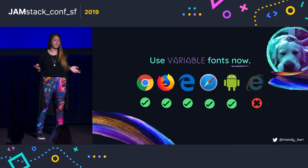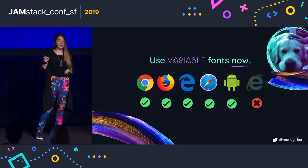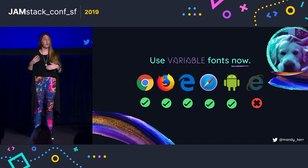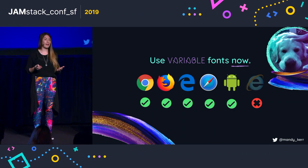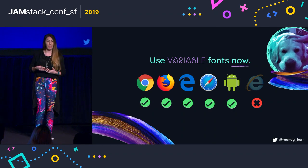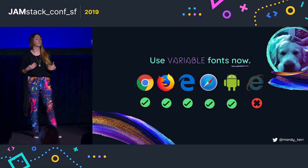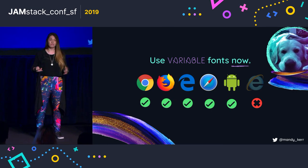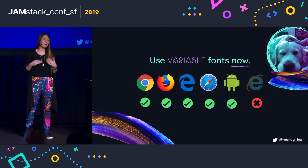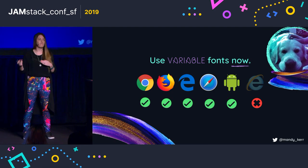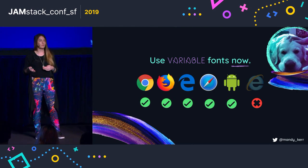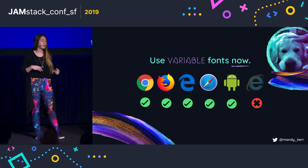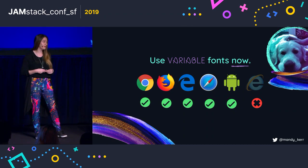We can use variable fonts now — browser support is really good. The only caveat is that for a browser like Firefox, you need a more modern operating system. On a Mac it's High Sierra and above, because it relies on the operating system to render the font in the browser. But you can totally use it now. If you need to support IE, you can fall back to a different font in your font stack, or use CSS feature detection to only load the font when you need it.